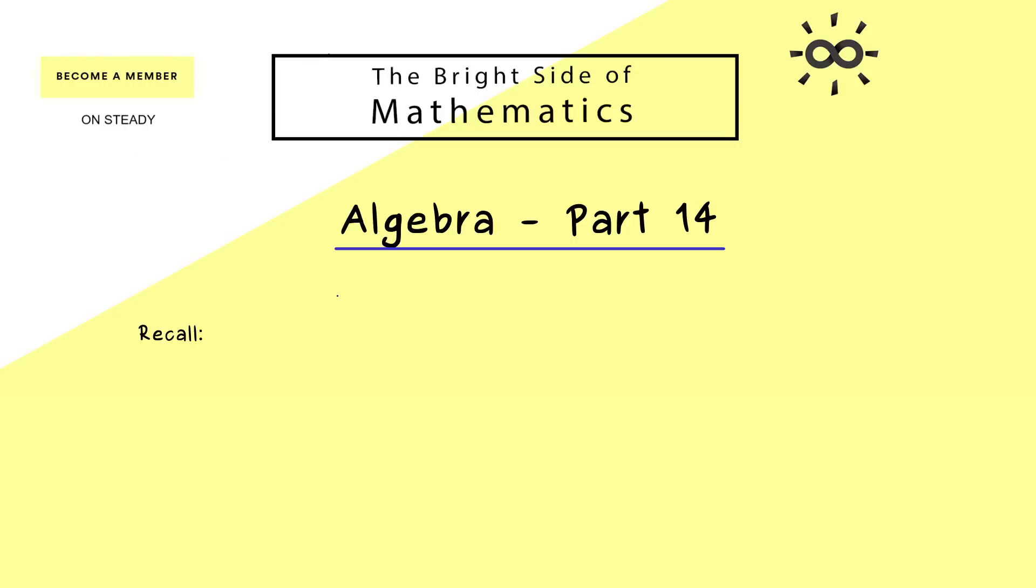Okay, then let's immediately start by recalling our group S3 from the last video. We have talked about this a lot and you might remember, it's simply the symmetry group of an equilateral triangle. And now it turns out that we have exactly 6 symmetry operations, so 6 elements in our group S3.